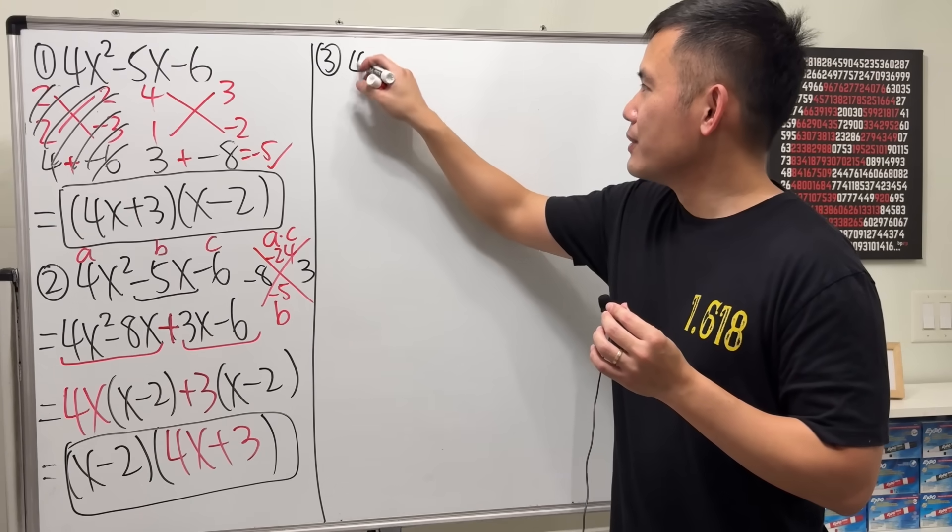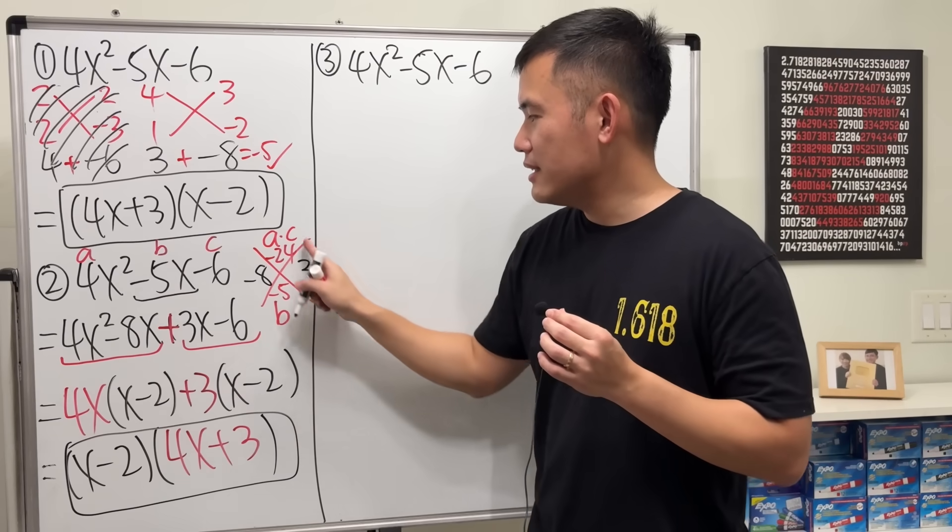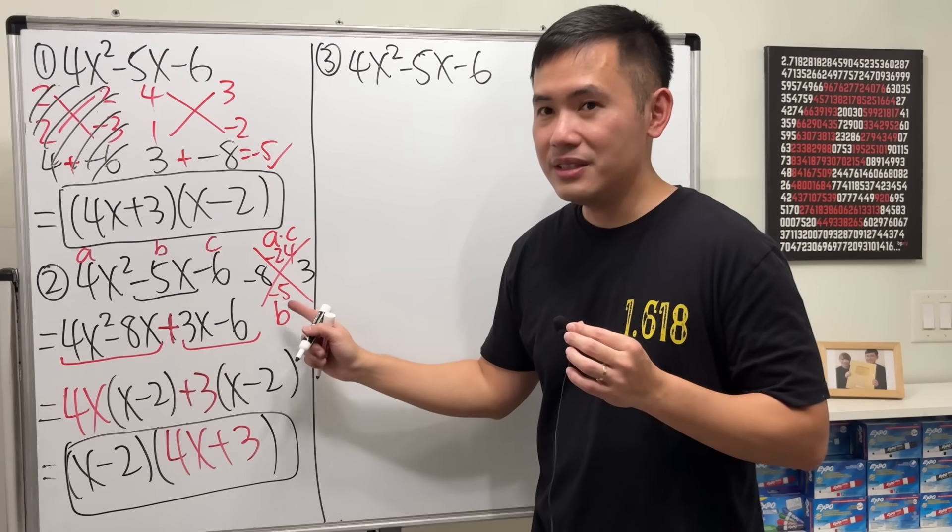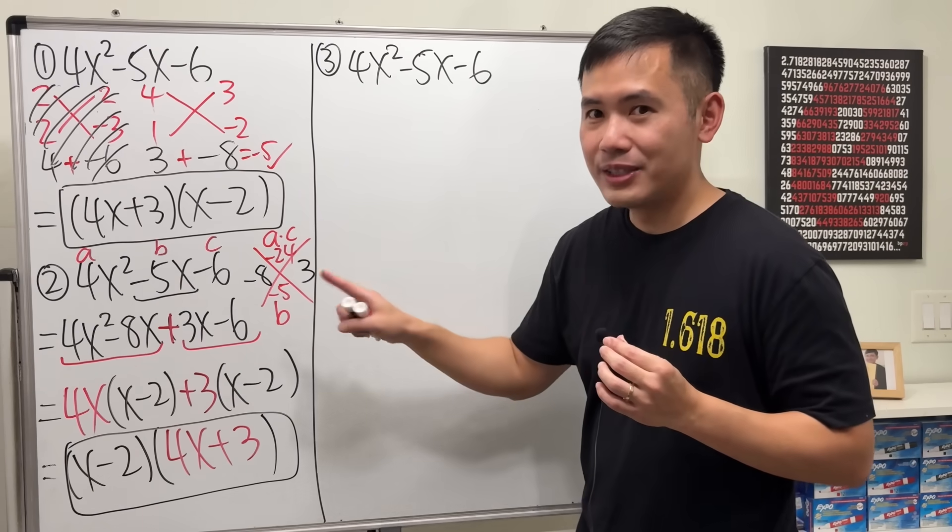Let's have a look right here. We still have to factor 4x squared minus 5x minus 6. And we still have to do the AC chart right here. So, I'll just use this. What we will do is, once you have this chart.